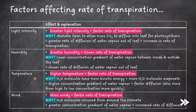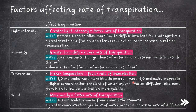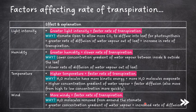Temperature is another factor affecting transpiration. The higher the temperature, the faster the rate of transpiration. This is because water molecules have more kinetic energy, so more water molecules evaporate, creating a higher concentration gradient of water vapor between inside and outside of the leaf, increasing the rate of diffusion of water vapor out of the leaf. Also, because water molecules have more kinetic energy, they move from high to low concentration more quickly. Finally, wind also affects transpiration: the more windy it is, the faster the rate, because wind removes water molecules from outside the stomata, maintaining a favorable concentration gradient for water vapor to diffuse out of the leaf.